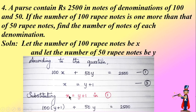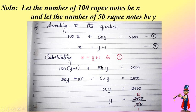We substitute x = y + 1 into equation 1. Replacing x, equation 1 becomes: 100(y + 1) + 50y = 2500. Expanding, we get 100y + 100 + 50y = 2500. Now 100y and 50y are like terms and we can add them: 100y + 50y = 150y. So we have 150y + 100 = 2500.